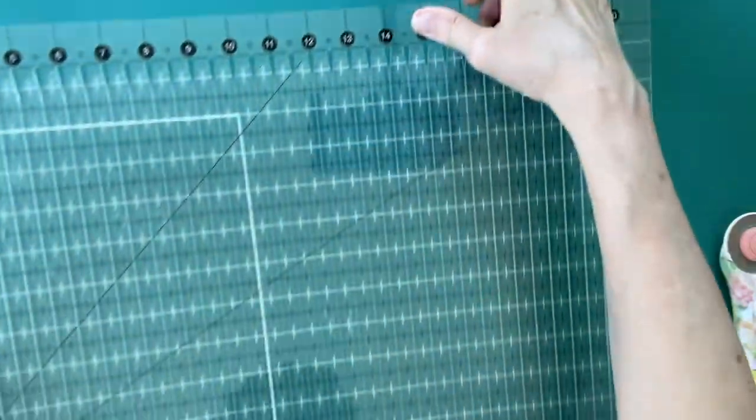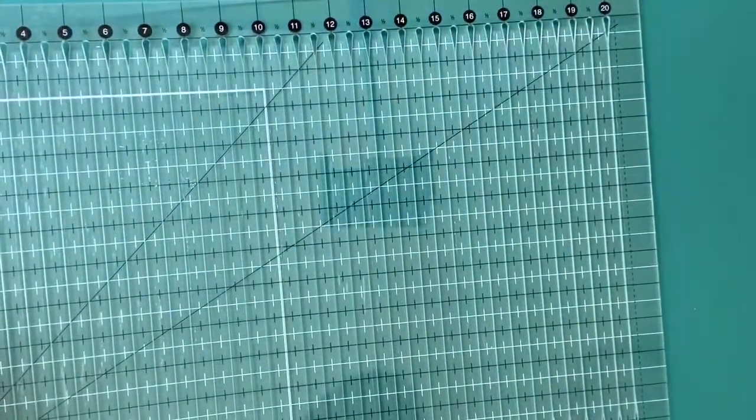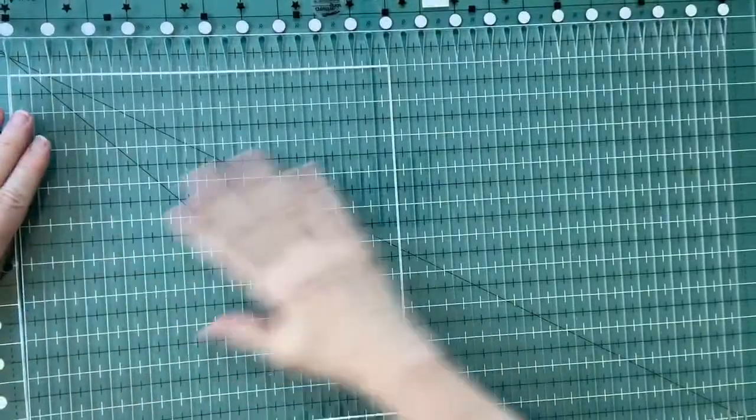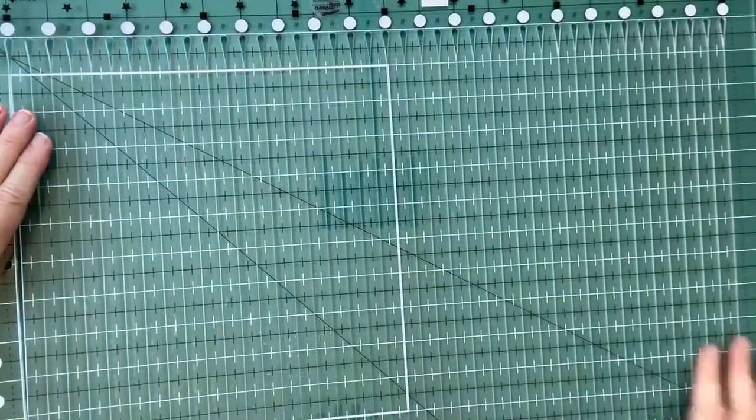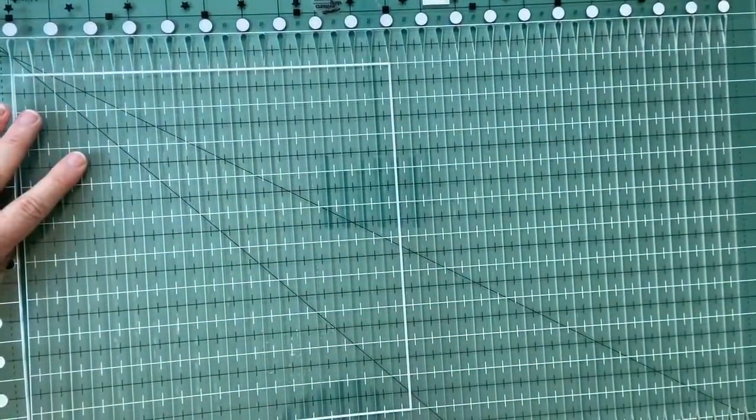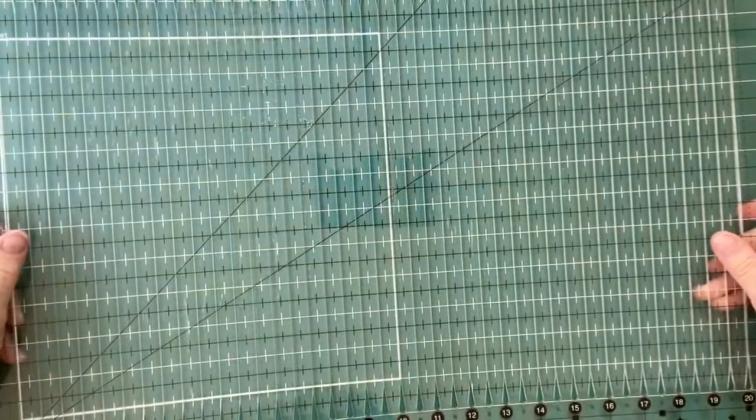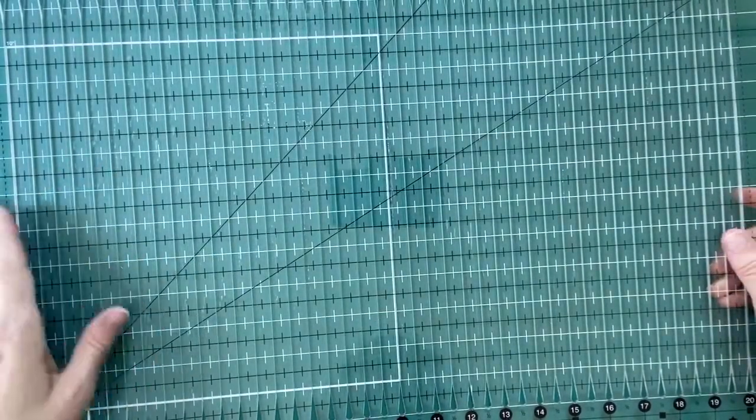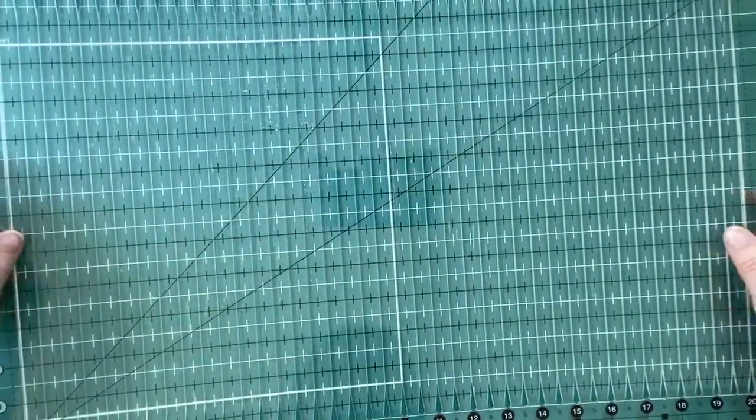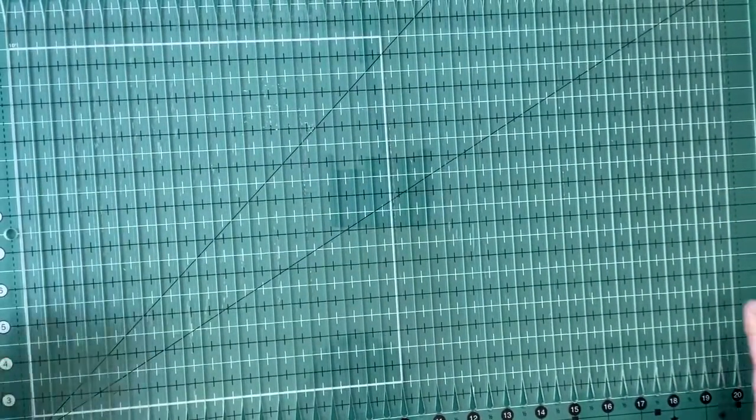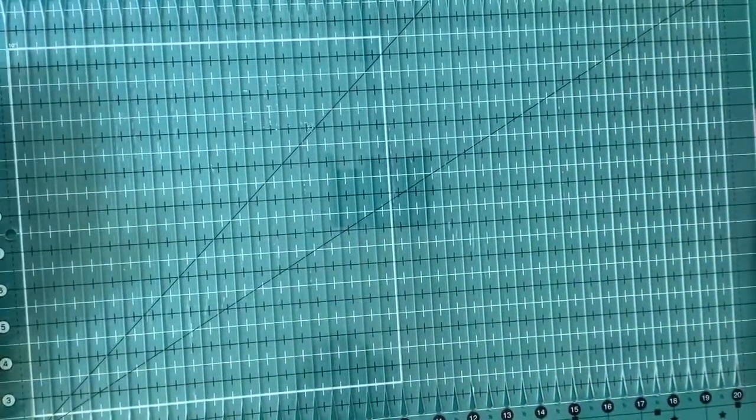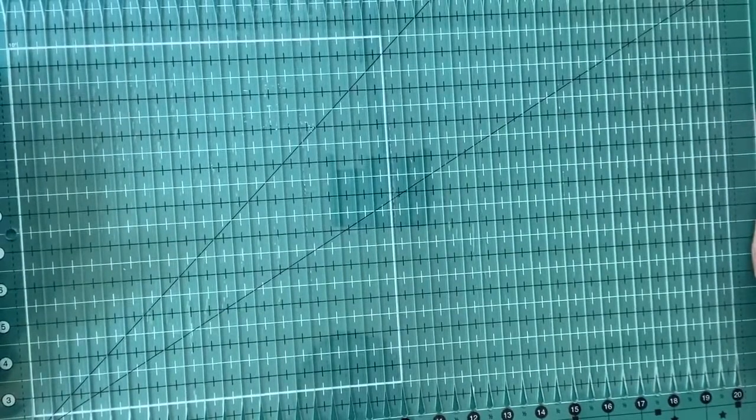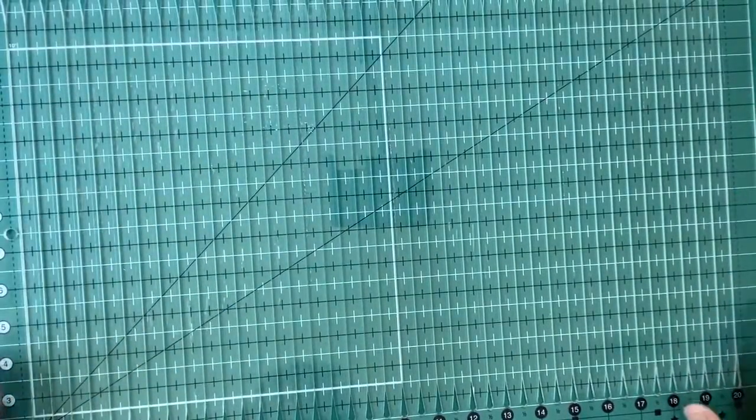This is the Stripology ruler. This is from Creative Grids and they're the folks that put some non-skid stuff on the back. They make lots of different rulers. They've got six by 24, eight and a half by 20, a whole collection of rulers. This one is called the Stripology because you can cut strips and sub cut strips very quickly and easily without having to do any math or goofiness.